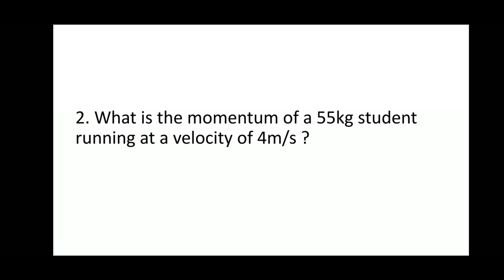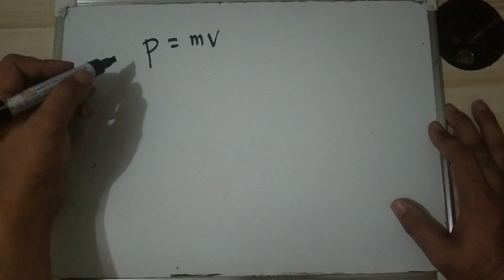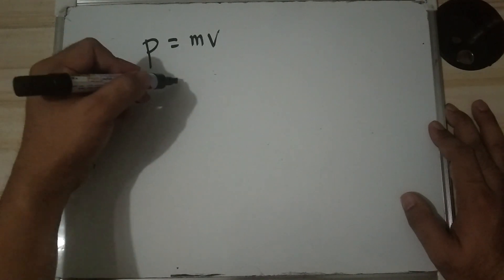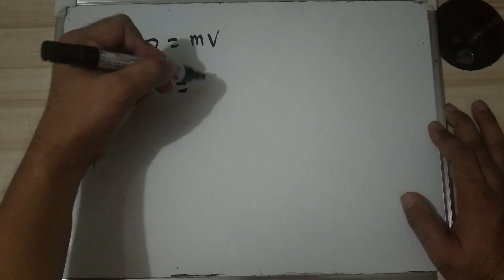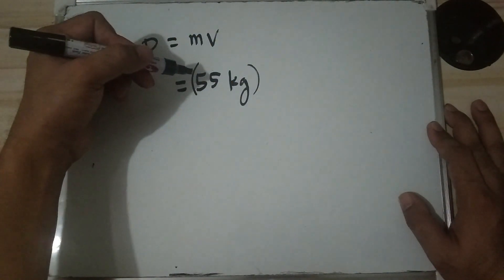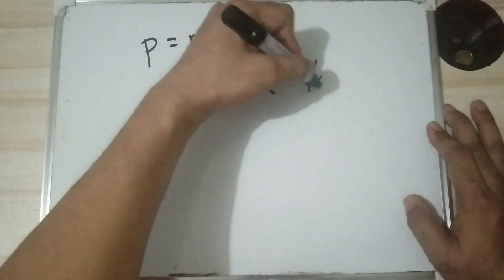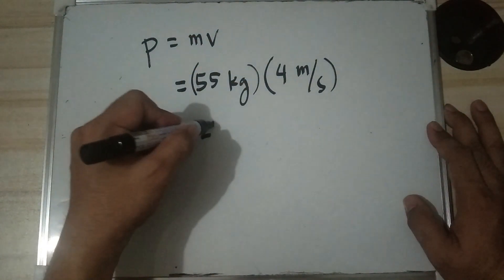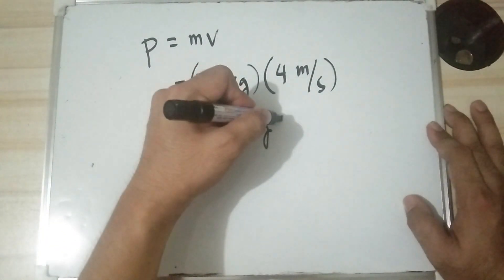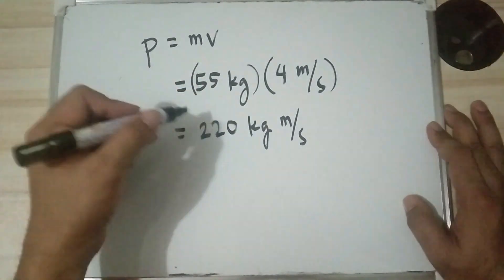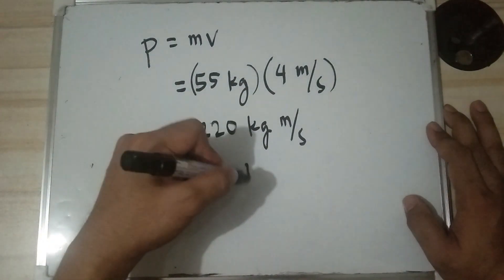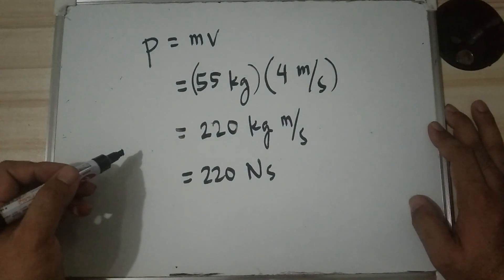Example 2: What is the momentum of a 55-kilogram student running at a velocity of 4 meters per second? Solution: p equals m times v, so p equals 55 kilograms times 4 meters per second, which gives 220 kilogram-meters per second, or equivalently 220 Newton-seconds.